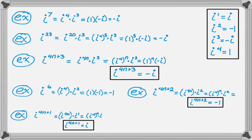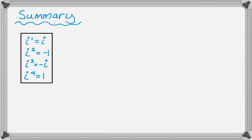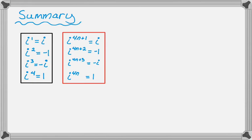The key is finding the remainder when you divide the exponent by 4, and then knowing these four things in the box. In summary: any time the remainder is 1, you're really just dealing with i. Any time the remainder is 2, you're dealing with negative 1. If the remainder is 3, you're dealing with negative i. And if the remainder is 0 — if 4 goes in evenly — then you're just dealing with 1, and it becomes as simple as possible.